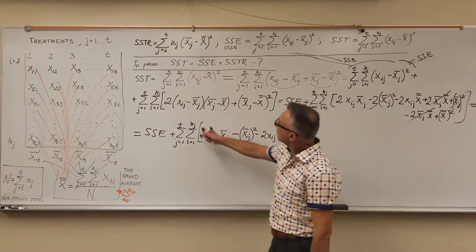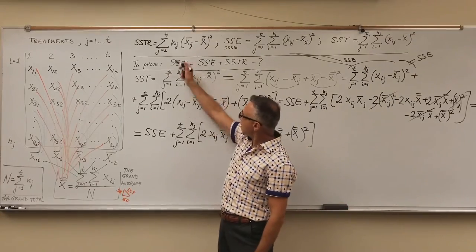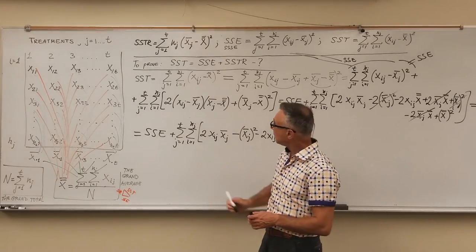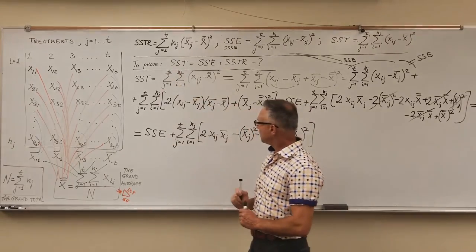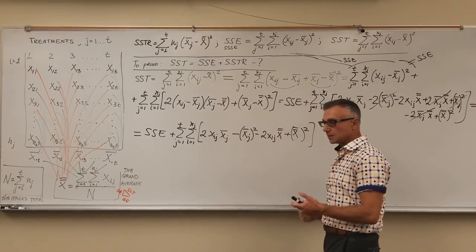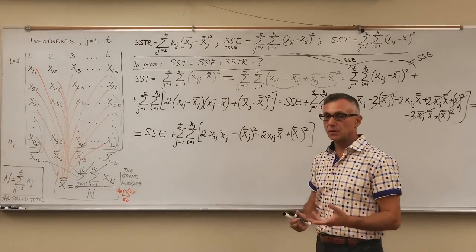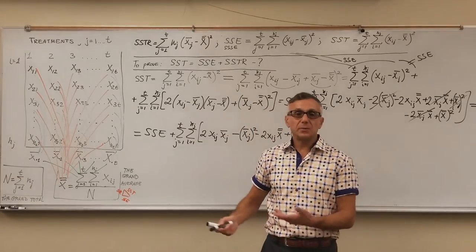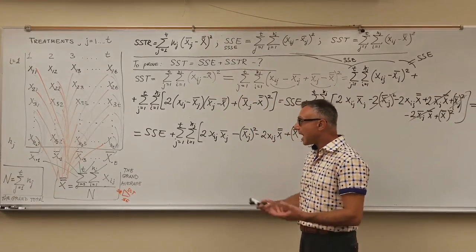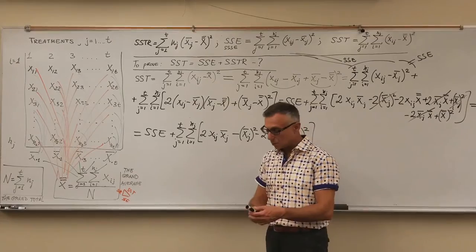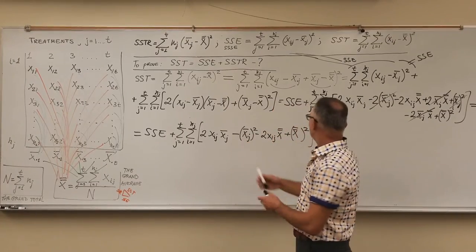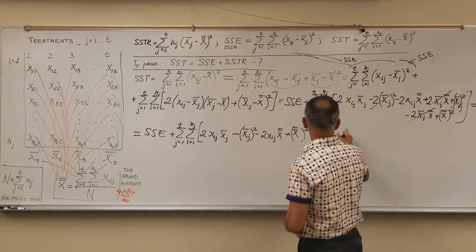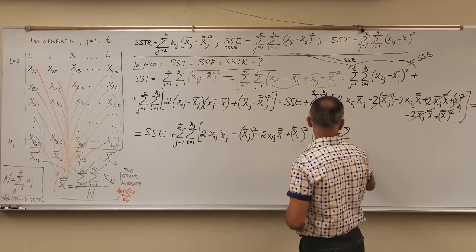Next, I'm trying to show that this remaining double sum is SSTR. It's currently a single summation in J but with an inner summation using the I-index — I need to get rid of that inner index. I'll expand it using the I-index, leaving only the outer sum. So it will equal SSE plus one summation with J running from 1 to T, and I expand the inner sum explicitly.